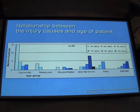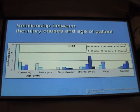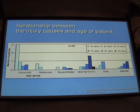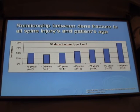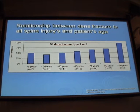This shows the relationship between injury cases and patient age. You can see on the left side the high peak — those are car and traffic injuries in young people and motorcyclists. On the right side are older patients with casual falls. If we look at the relationship between odontoid fractures and patient age, we see that odontoid fractures predominantly occur in patients 70 years and older.